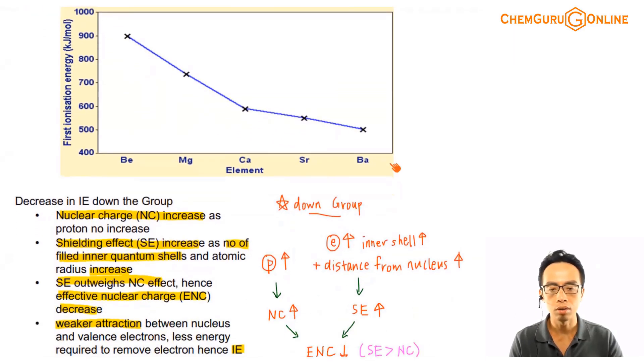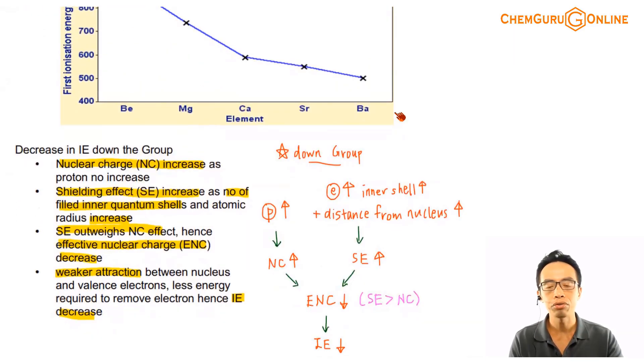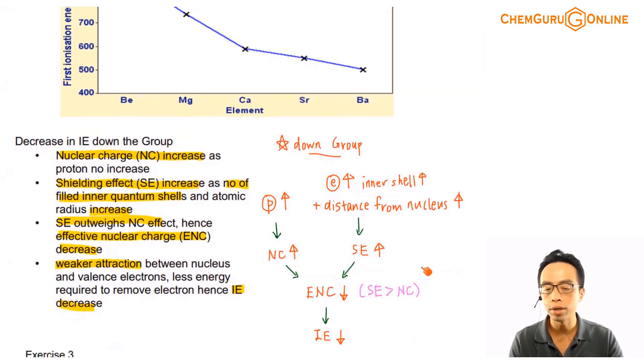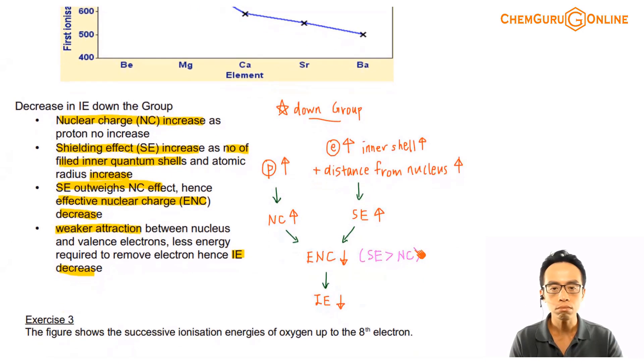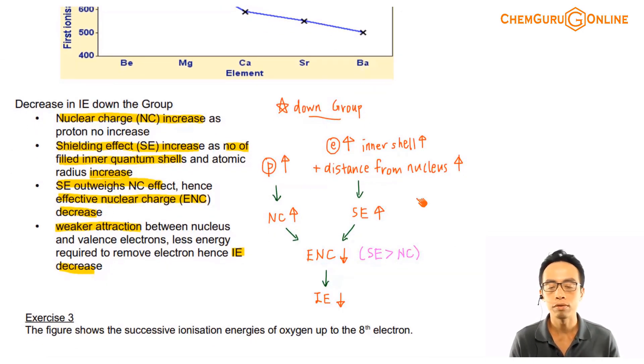How about first IE trend down the group? Ionization energy trend down any group usually will decrease. So why is that the case? Again we will use this flow chart.